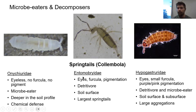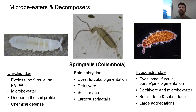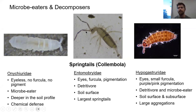The next group are the Entomobryids, or elongate springtails — these are the ones we just saw in that video. These have eyes, a long developed furcula, pigmentation, and hairs on their body. These guys are detritivores that live on the soil surface, primarily eating leaf litter and bacteria growing on the litter, breaking it down and comminuting the litter to increase the surface area of litter that enhances the ability for microbial communities to colonize and further break it down. These are the largest springtails we get around here — they're still pretty small, but you can actually see them with the naked eye; you could fit maybe 10 on your thumbnail.